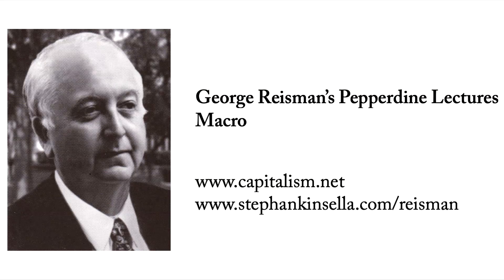Hoover called White House conferences of major businessmen and got them to agree not to reduce wage rates in advance of reductions in prices. The fall in wage rates in the 1929 depression proceeded far more slowly than in any previous depression. In 1930, with already mass unemployment, wage rates fell an average of 3%; in 1931, maybe 6-7%. Back in 1921, within one year, the fall in wage rates was much bigger than what took several years in the 1929 depression — and the depression of 1921 was over very quickly.